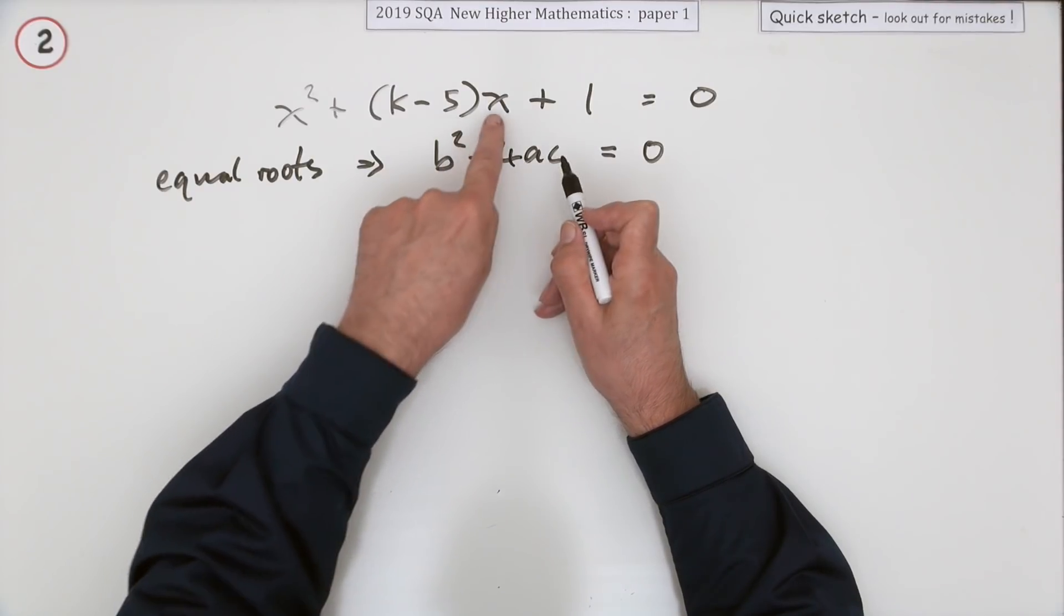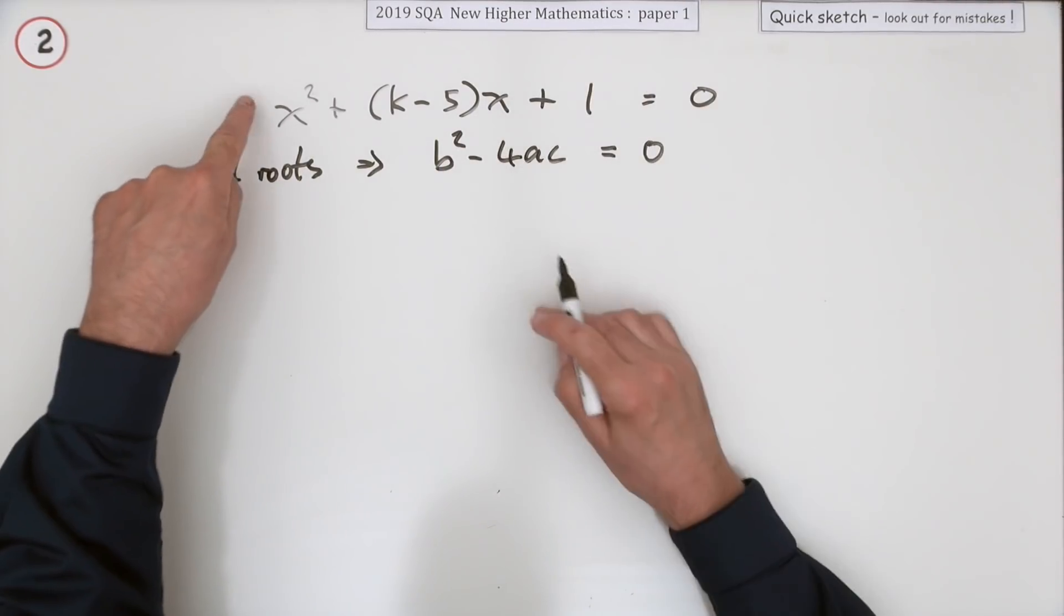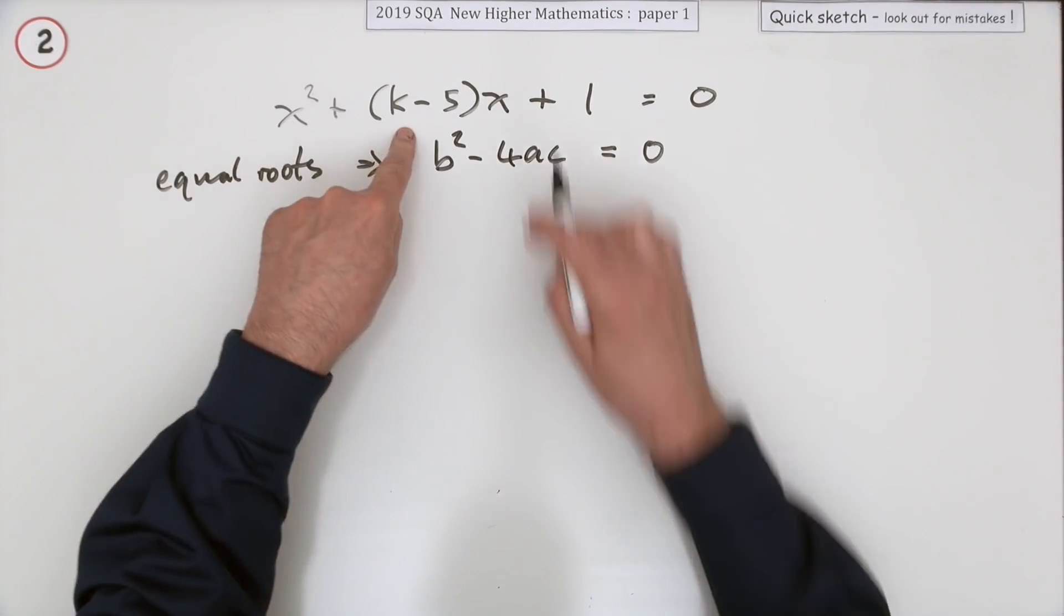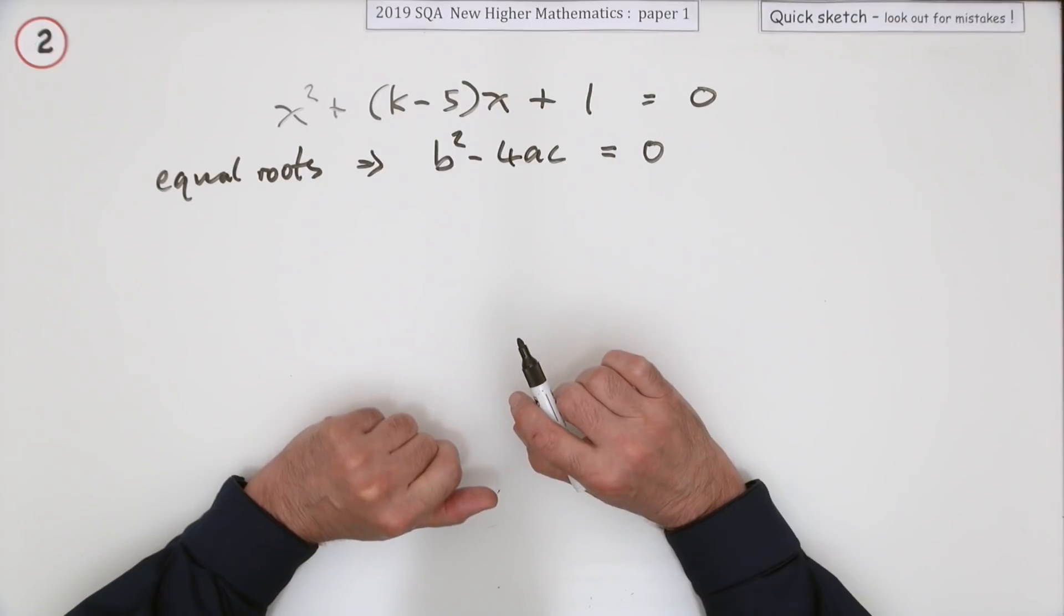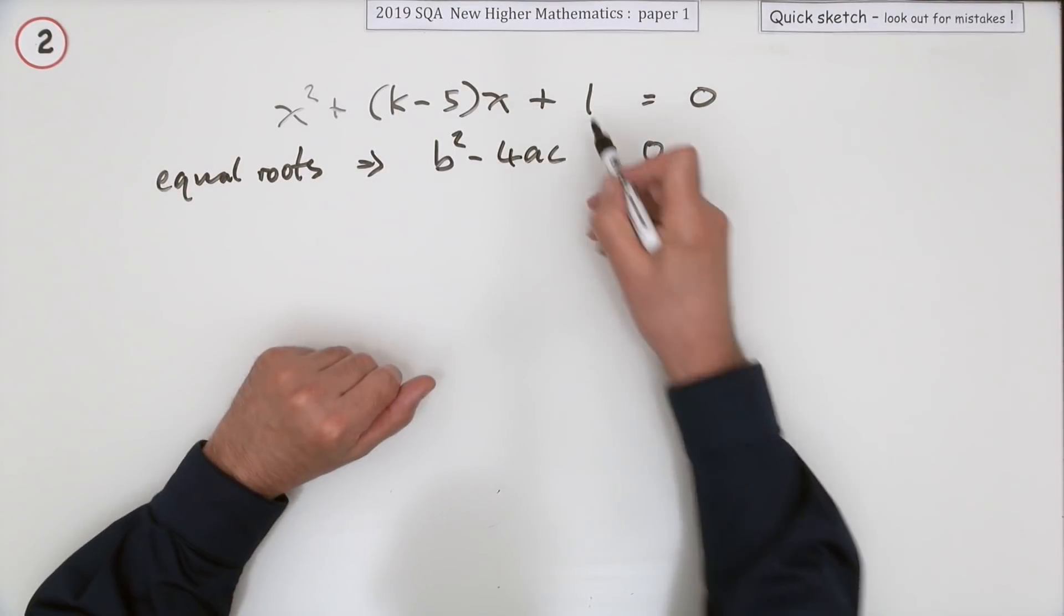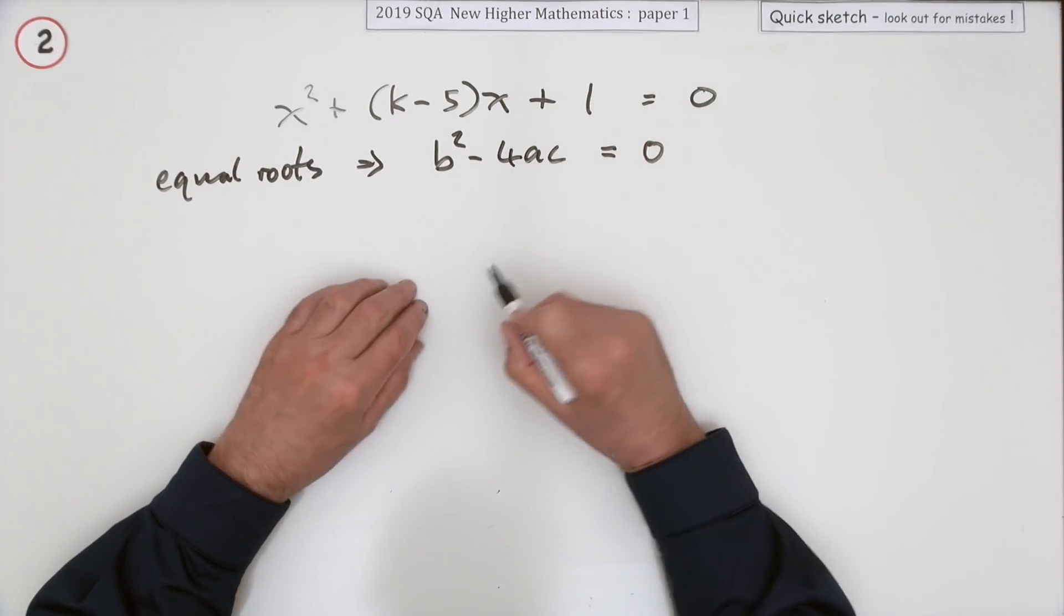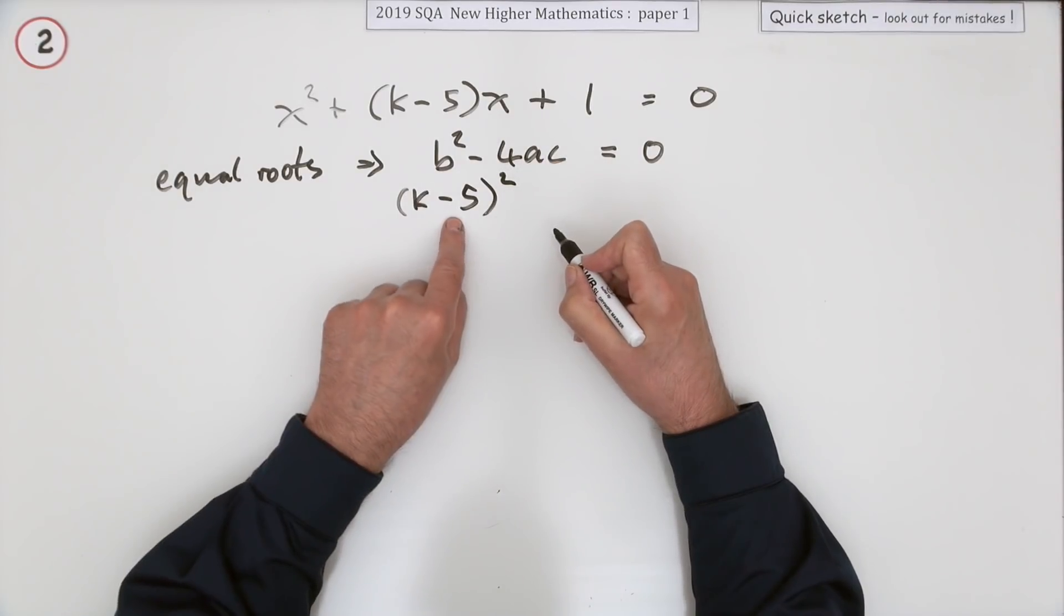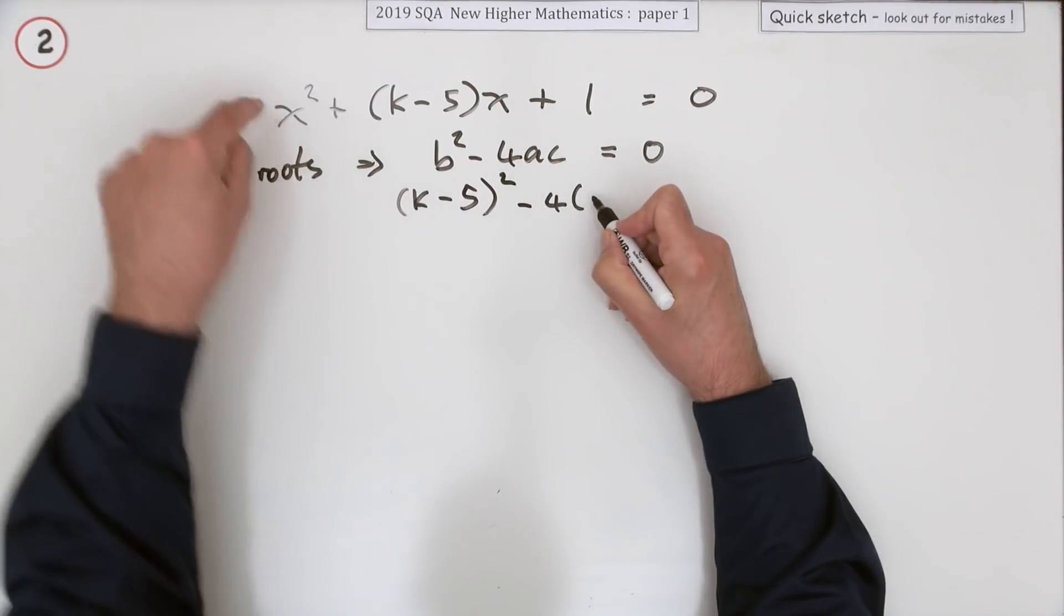Then what are these coefficients? Well, b is the coefficient of x. They're all quite clear here. The coefficient of x squared, which is a, is one. The coefficient of x is this bracket k minus 5, and the constant coefficient on its own is one.